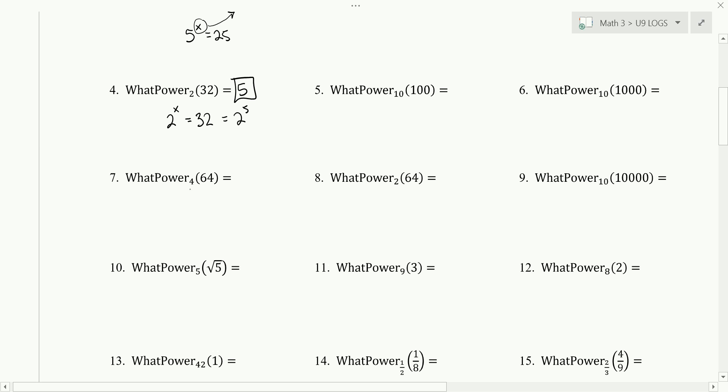Number 7 is asking the question 4 to what power is 64. 4 to the second power is 16. 4 to the third power is 64. So our power is 3.